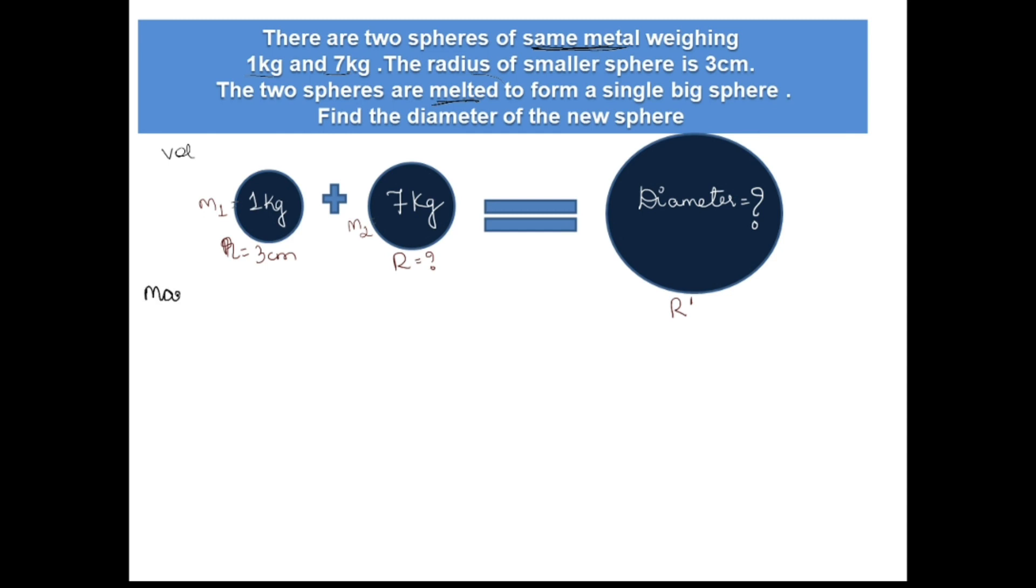If you recall from 9th and 10th standard, if they ask us to find the mass, we used to find volume and density would be given, so we used to multiply by density. Now in this case, volume will be equal to mass divided by density. Volume of the first small sphere divided by volume of big sphere.